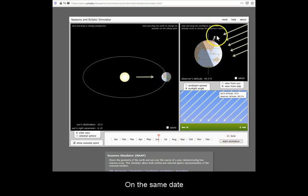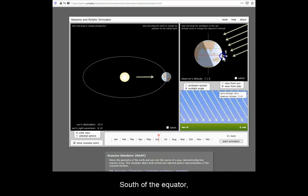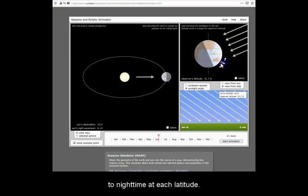On the same date, the reverse is true in the southern hemisphere. South of the equator, there is less daylight compared to nighttime at each latitude.